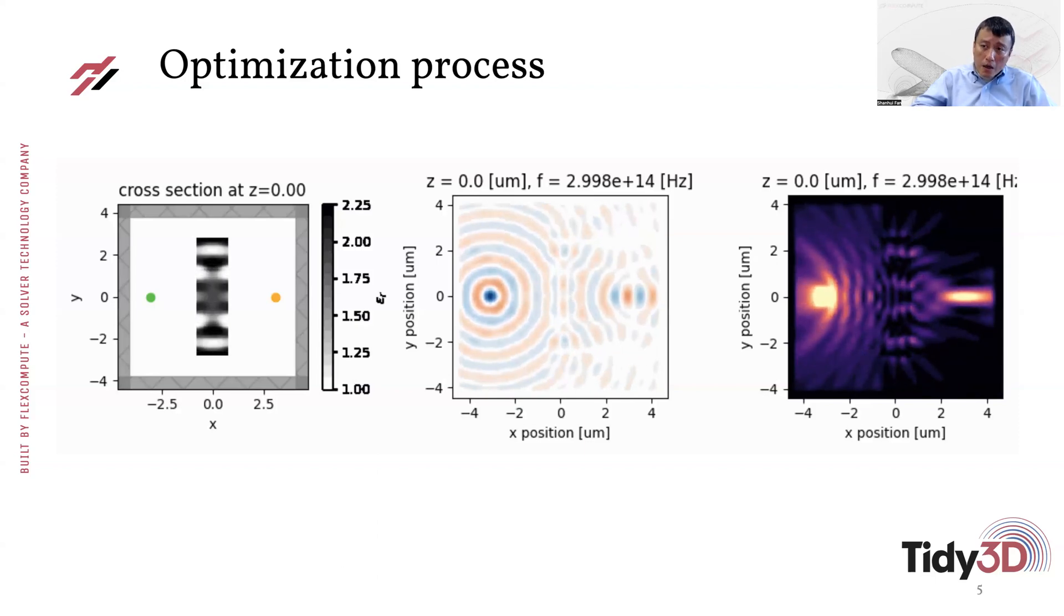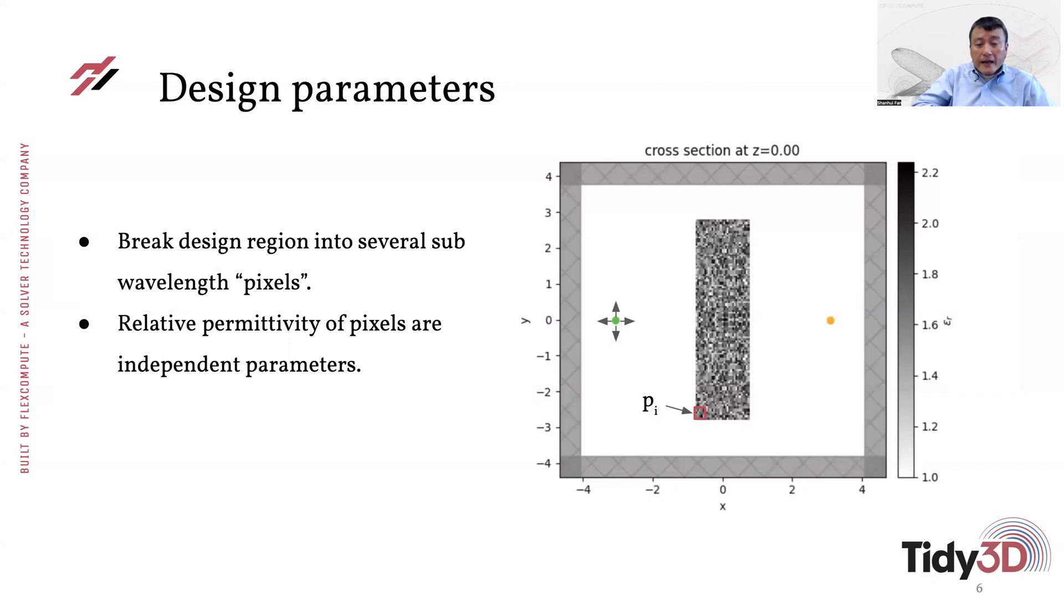Now, let's go into a little bit more details about how this optimization is set up. So as I mentioned, the design region here is this rectangle between the source region and the monitor point. And what we do is to break the design region into several hundreds of sub-wavelength pixels. And the relative permittivity of the material at each of the pixels is then the parameter that we control. So there are a large number of independent parameters that we try to control in this optimization process. And the adjoint variable method then allows us to compute the gradient of the objective function to every one of these permittivity values in a very efficient way.